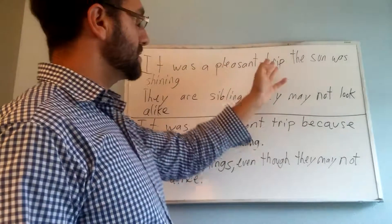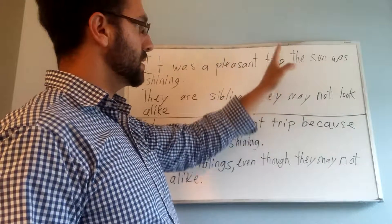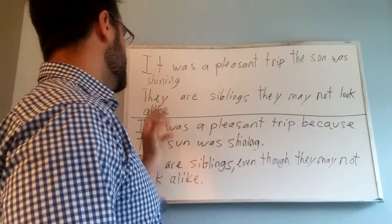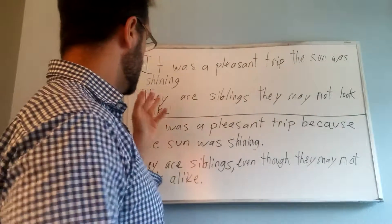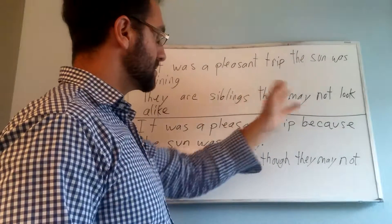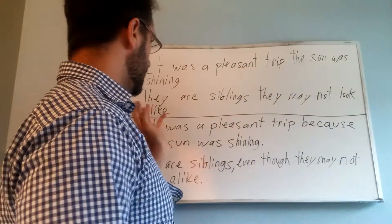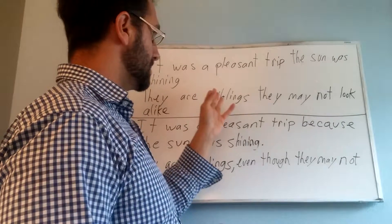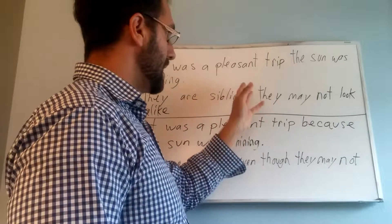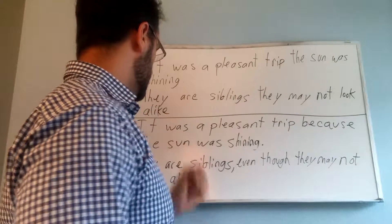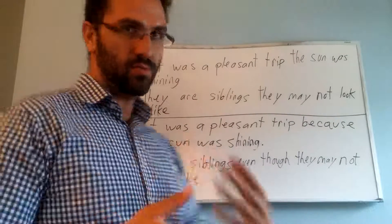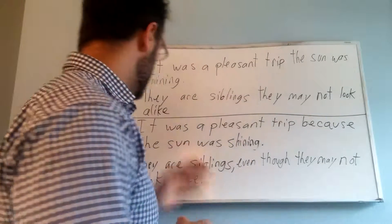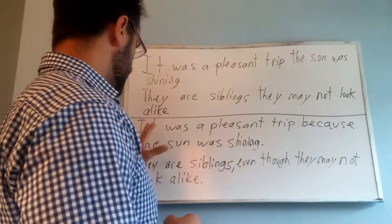So, it was a pleasant trip — we need something here to segue to the sun was shining. In the second sentence we have here, their siblings, they may not look alike. We need something to segue between their siblings and they may not look alike. Now, to rearrange the sentences in the form that's proper, we would make it like this.